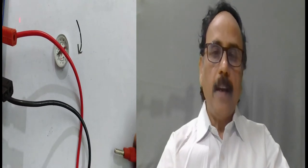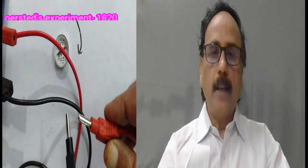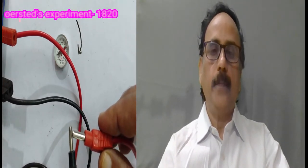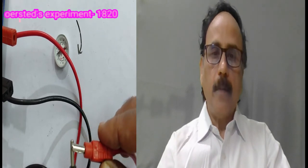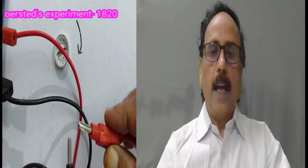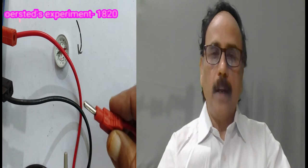In 1820, Hans Christian Oersted discovered how to turn electric current into magnetism. Till such time, physicists were studying electricity and magnetism as two separate phenomena.